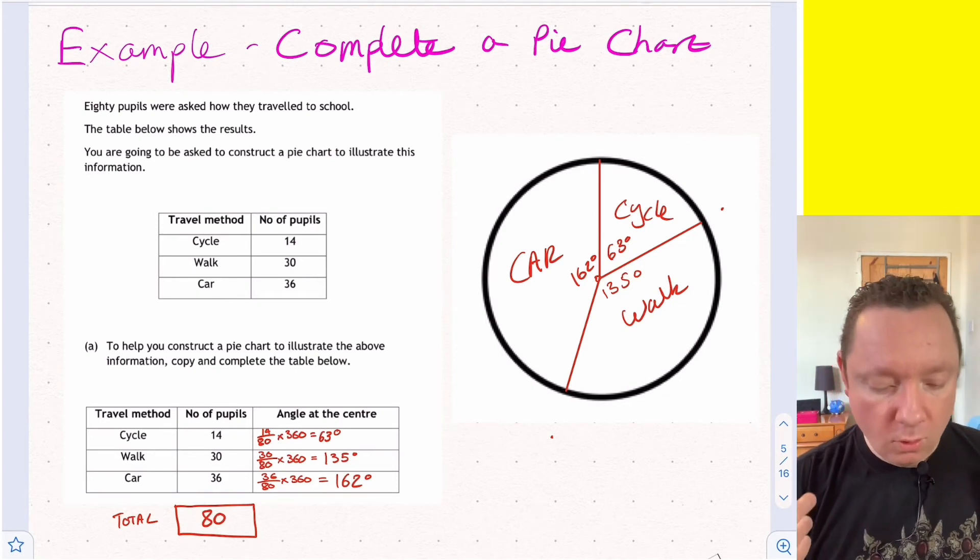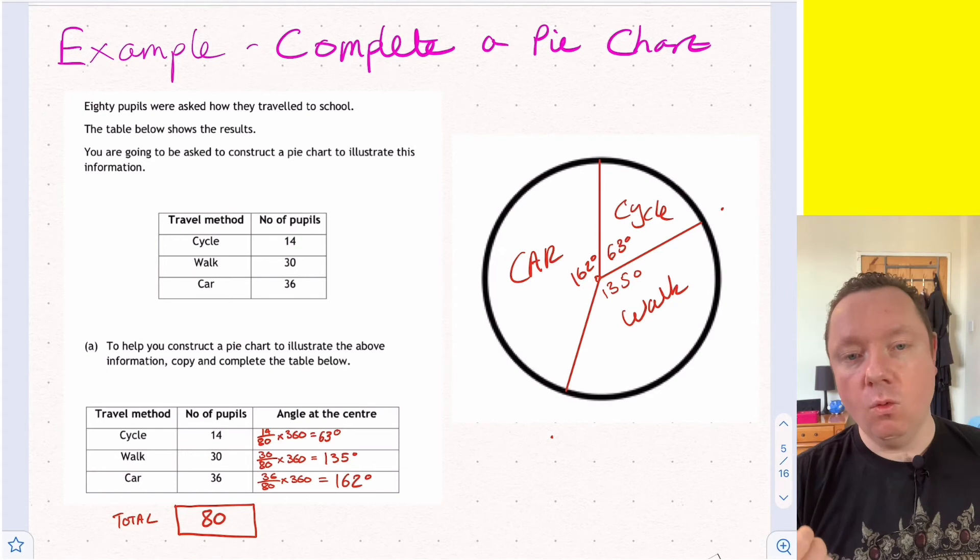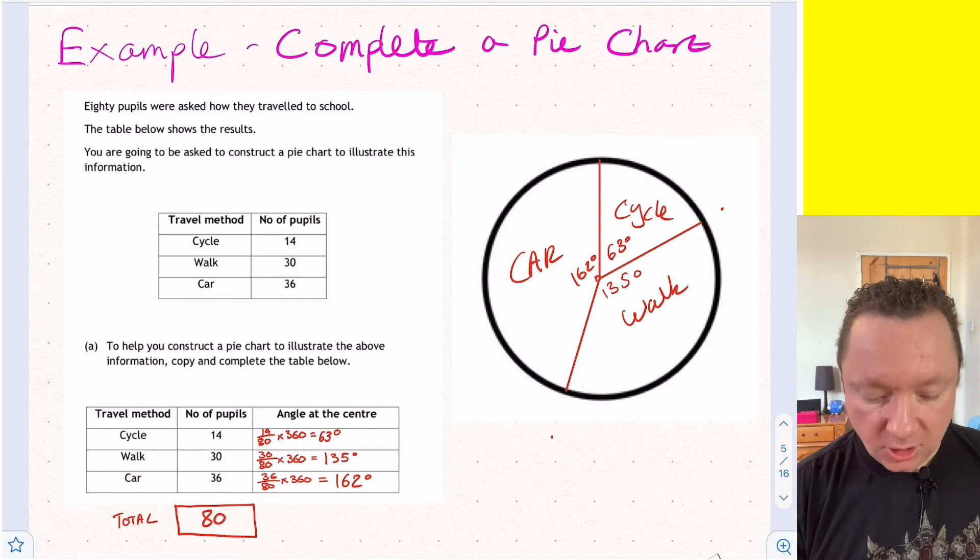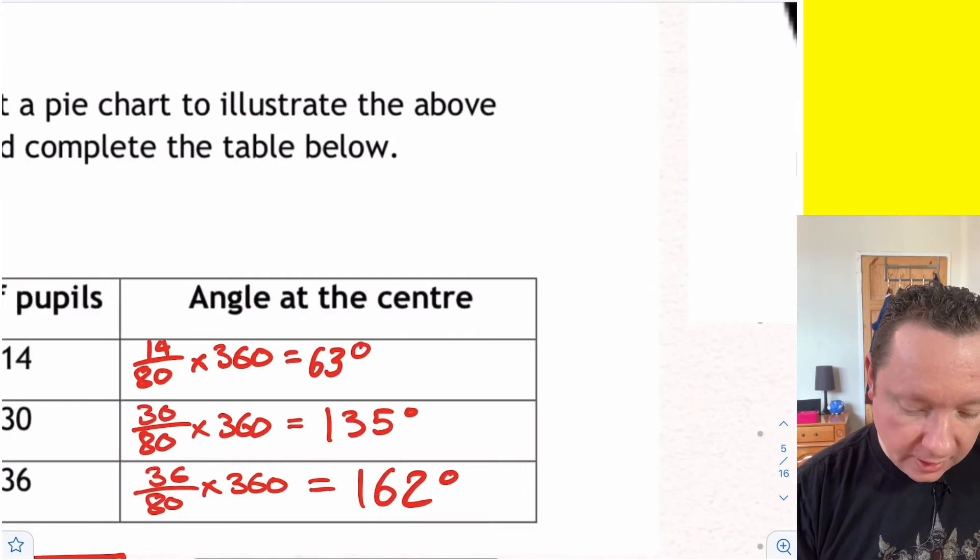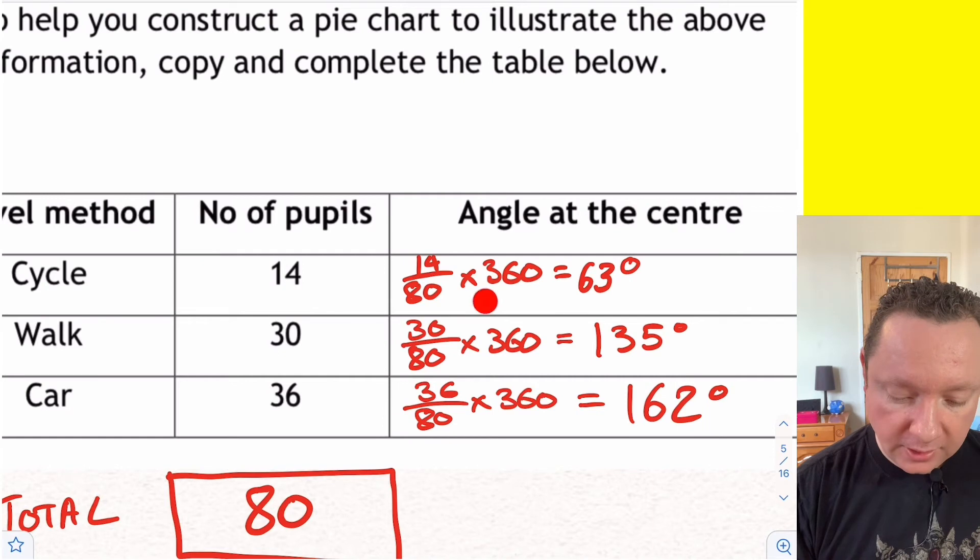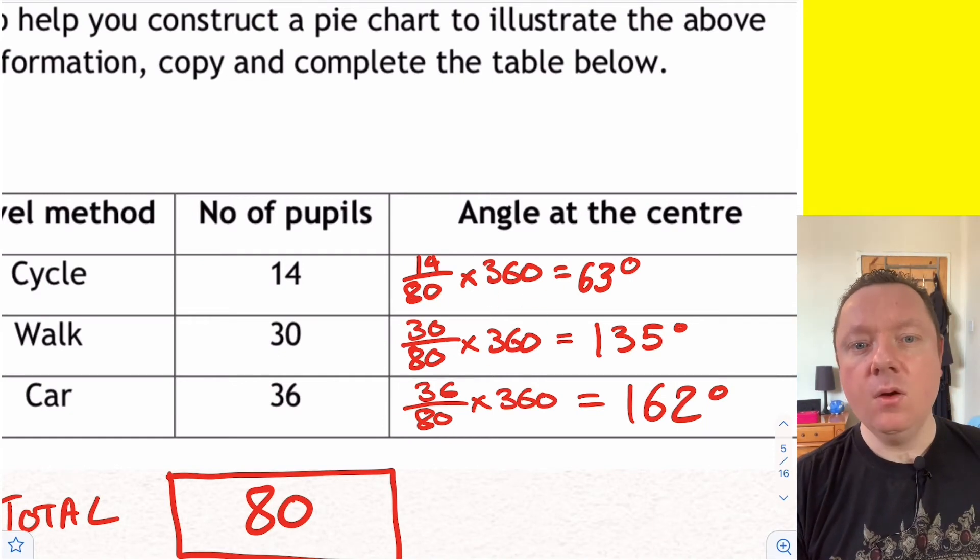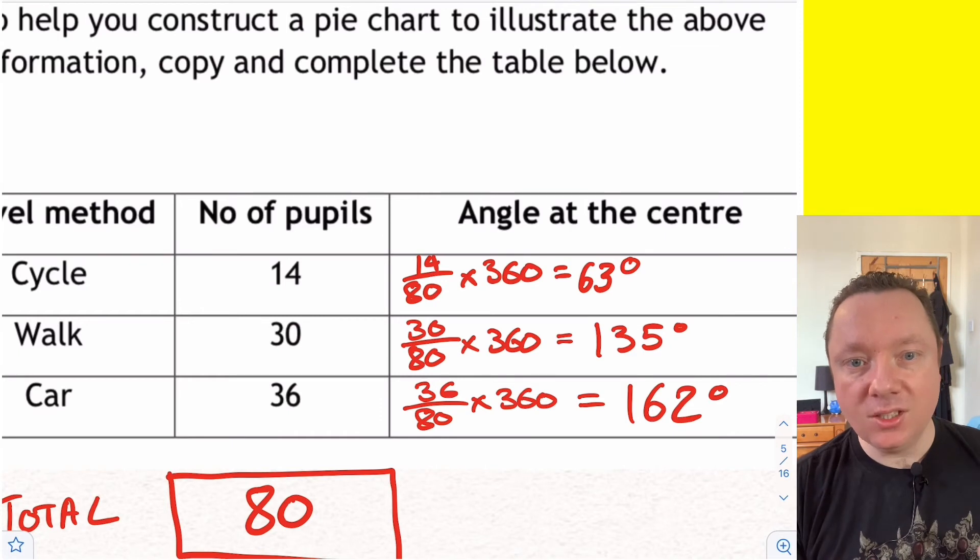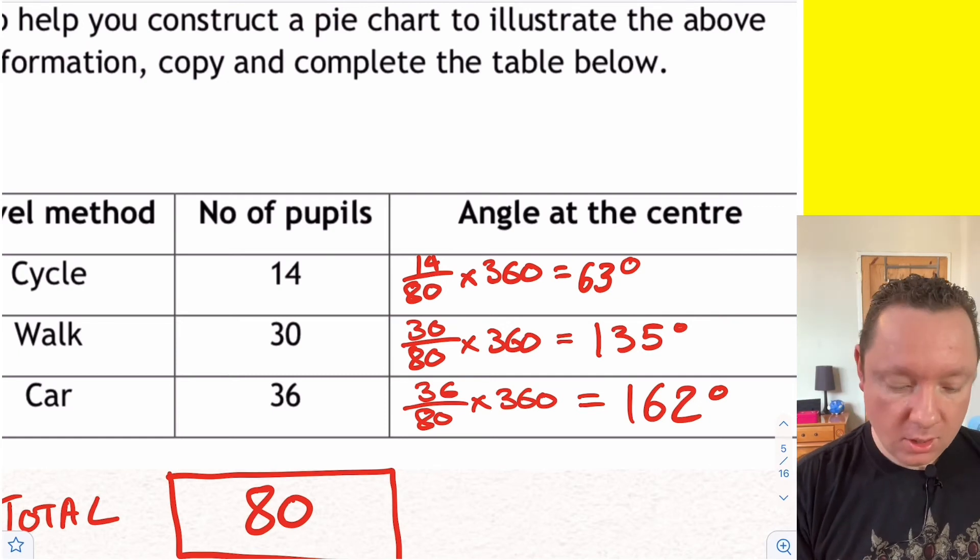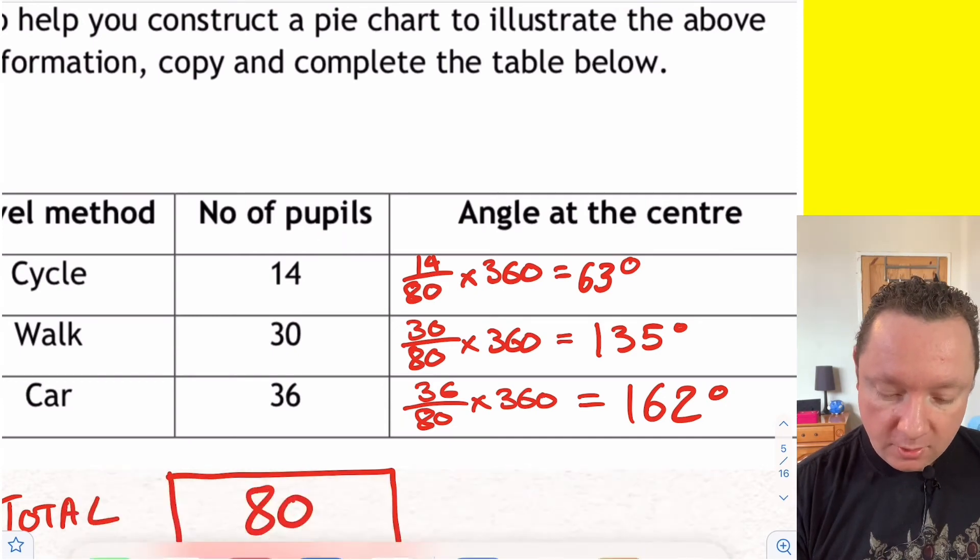And what I really want to know is what fraction of the people cycled, what fraction walked, and what fraction got a car. So that's just the number of people out of 80 fraction. If I zoom in, what I've done to get the angle is I've took the number of people out of 80, but then I've times by 360 each time. Why 360? Well, if you take a circle, there's 360 degrees in the circle. So if I do the fraction times 360, that'll tell me the angle that I need to draw in my circle for my pie chart.